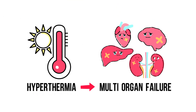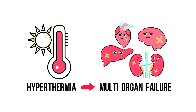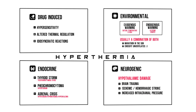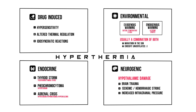In summary, when your patient presents with hyperthermia, beware of possible multi-organ failure. Go through your ABCs and start cooling. When figuring out the cause, get a history to determine if it's drug-related, environmental, endocrine, or neurogenic. If it's drug-related, follow the mentioned steps to figure out the cause. Discontinue the drug and start appropriate treatment.